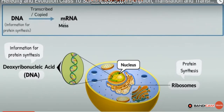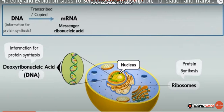What is mRNA? It is messenger ribonucleic acid. We have three types: mRNA (messenger RNA), tRNA (transfer RNA), and rRNA (ribosomal RNA).